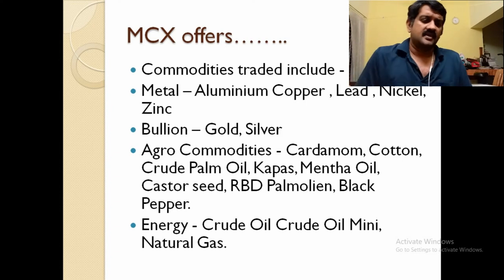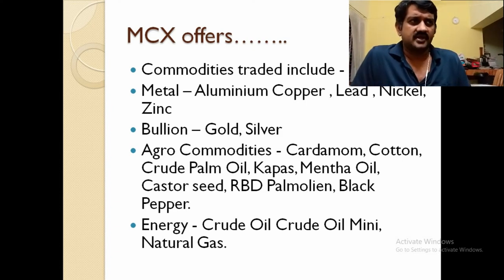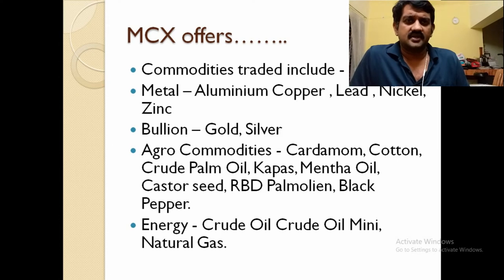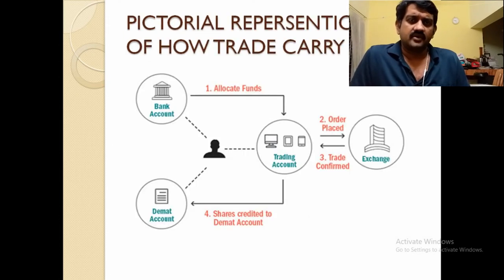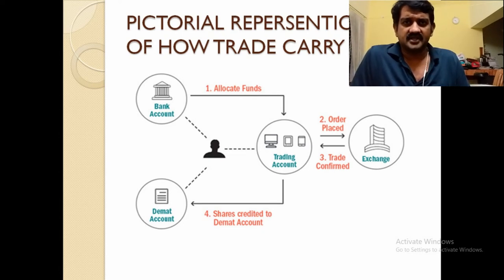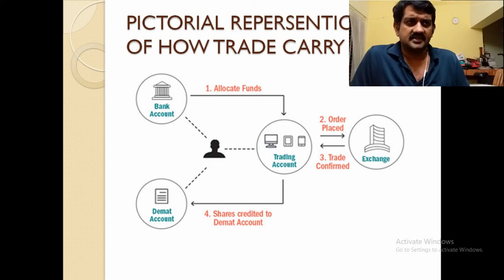Next is an overview of how the trading account, demat account, and bank account work together. You park money in your savings bank account; funds are transferred to the trading account. After buying shares from the exchange, those shares go to the demat account, which is an electronically held account. You place your order through the trading account and park the received shares in the demat account.